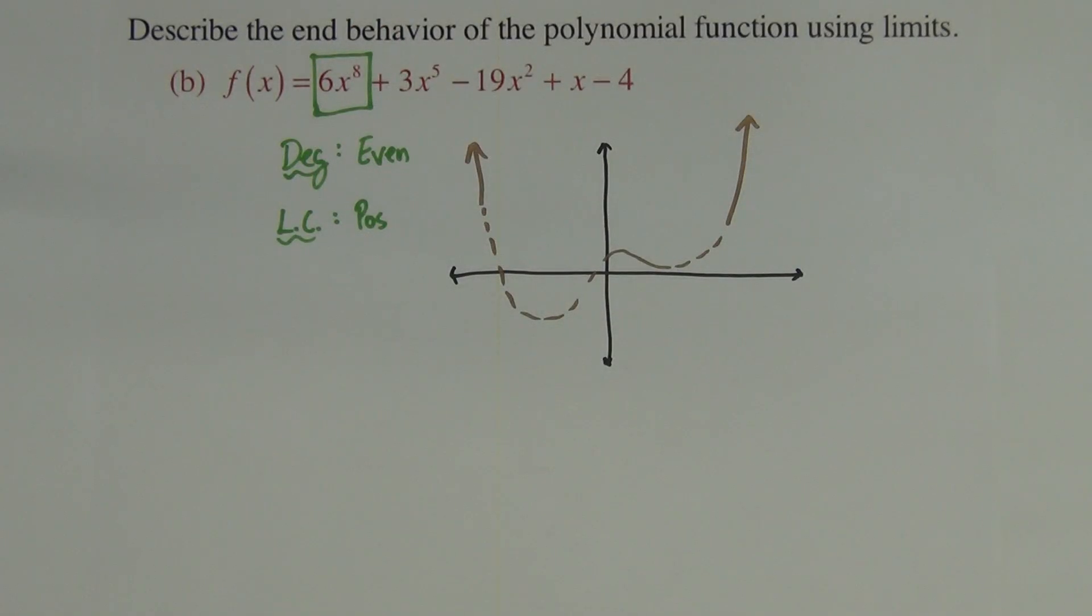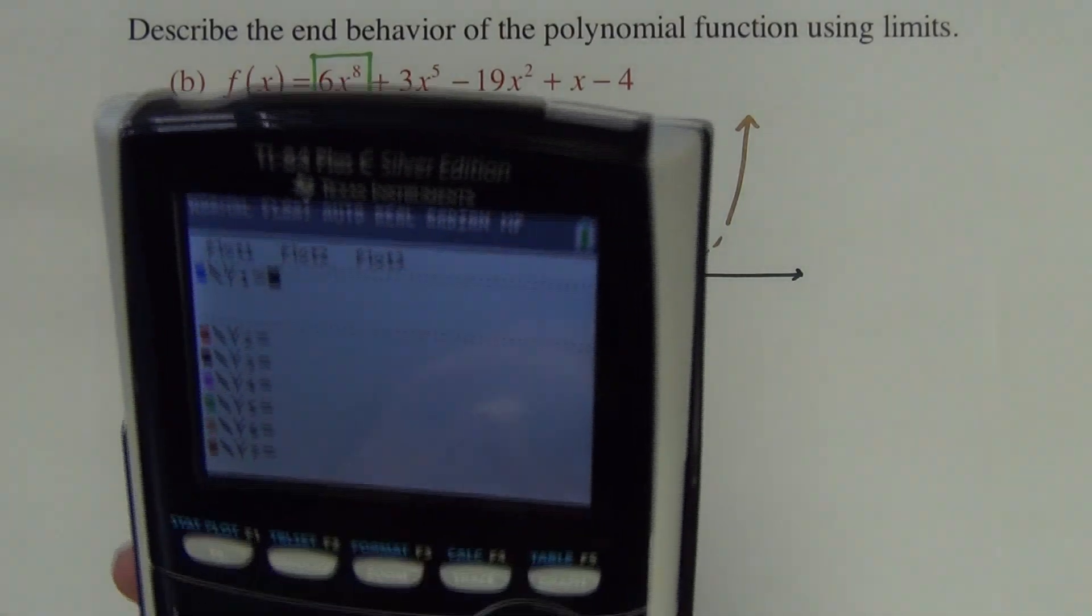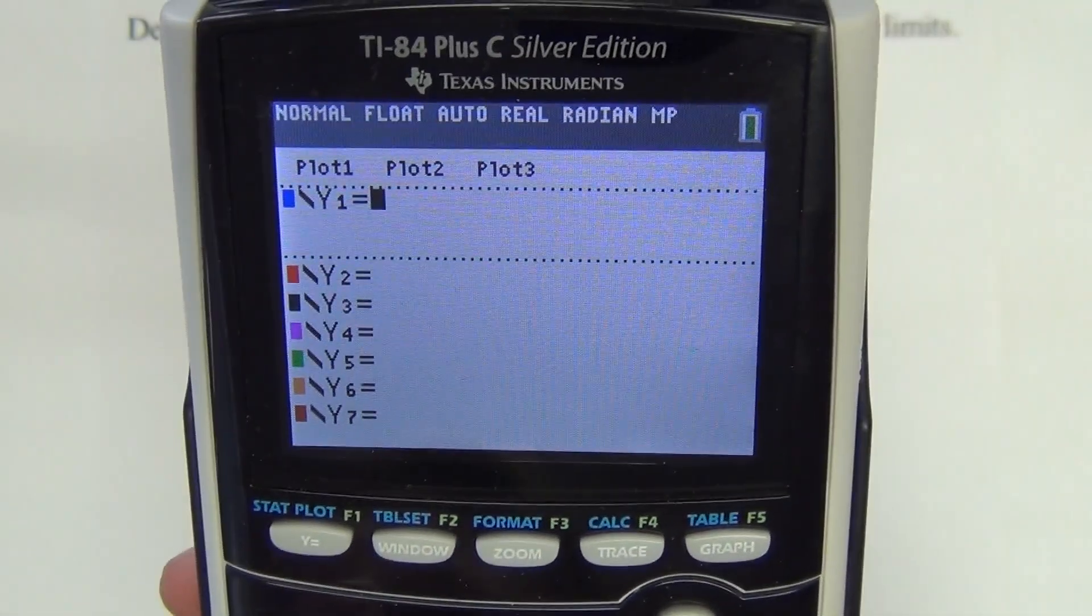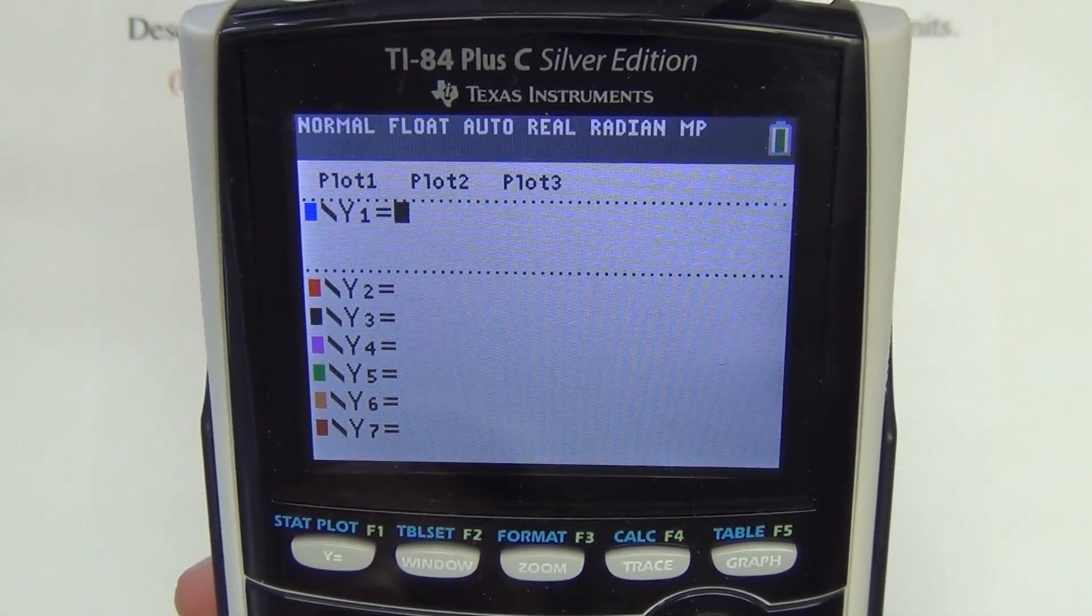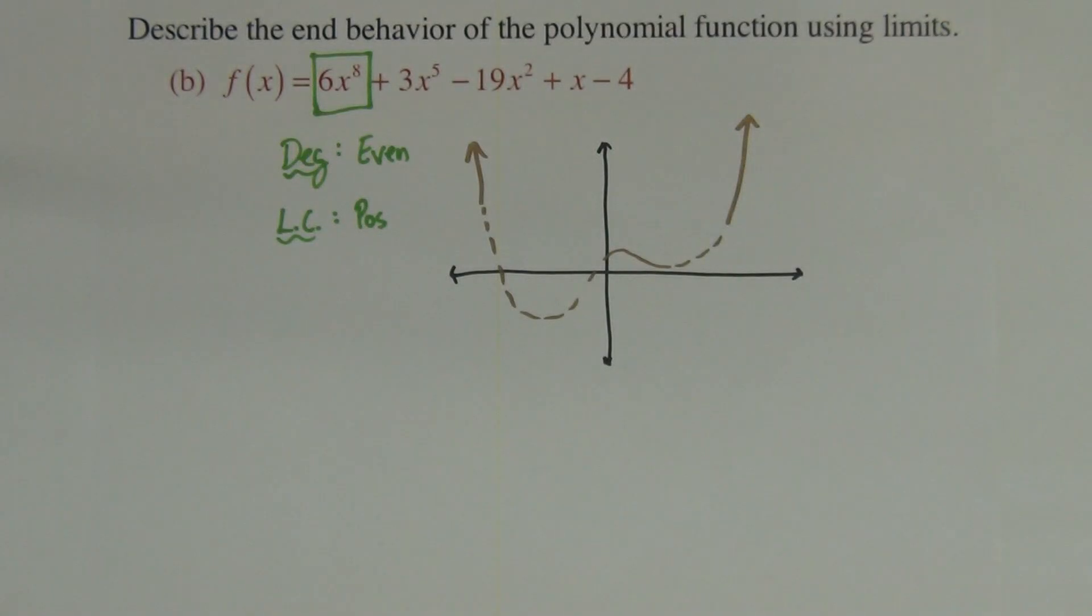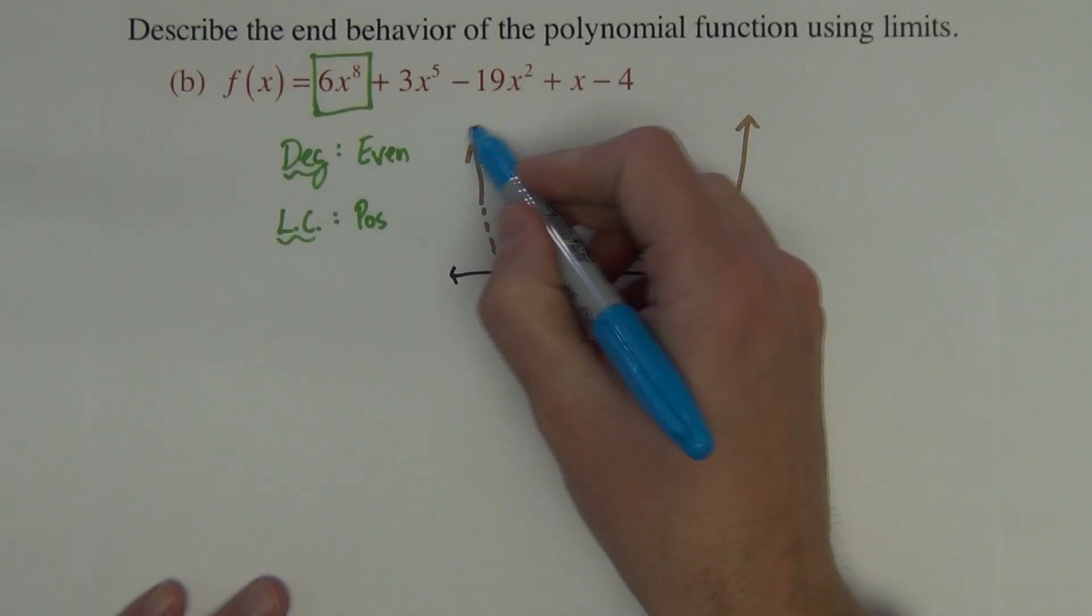If you wanted an exact picture of this function, then you could use your graphing calculator going to the y equals screen. You could type this in and graph it, and you could see for yourself what the end behavior was. So if you have forgotten this leading coefficient test, you could use your calculator still to help you answer this question.